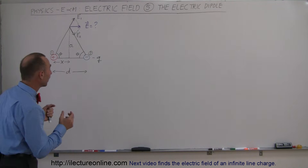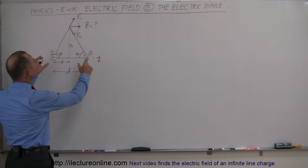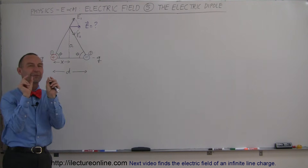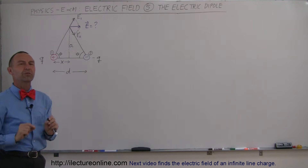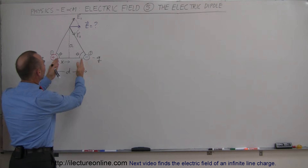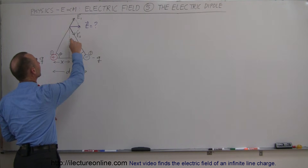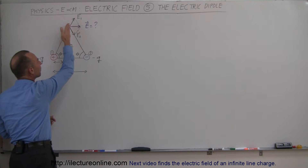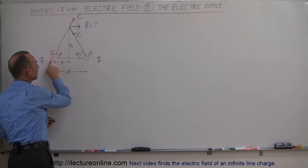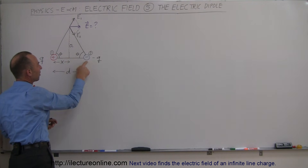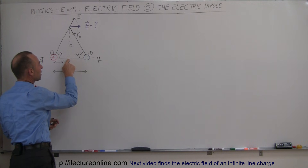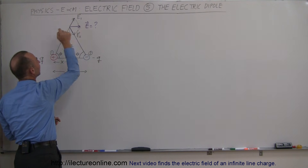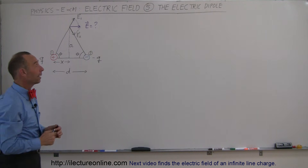What is an electric dipole? An electric dipole is two charges that are equal in magnitude but opposite in sign that are very closely spaced together. We want to find the electric field at some point along what we call the perpendicular bisector. We find the halfway point between the two charges, draw a line perpendicular to that line, and then find the electric field somewhere along that line.